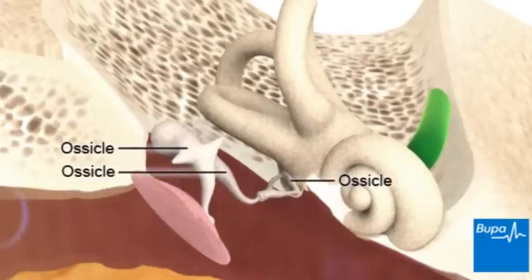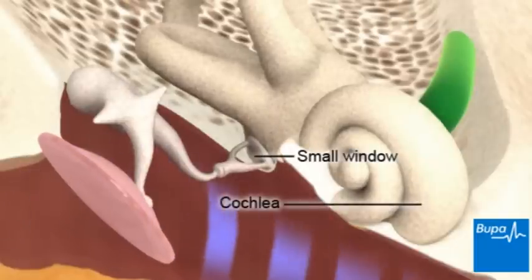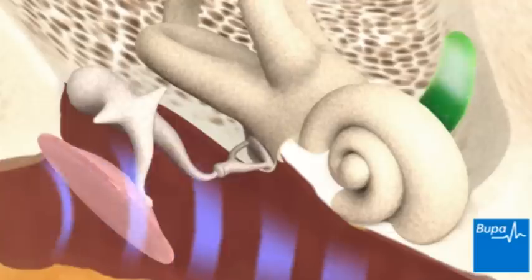Your ossicles amplify the sound, which then passes through a small window into your cochlea. In the cochlea, the sound waves are converted into electrical signals that travel to your brain.